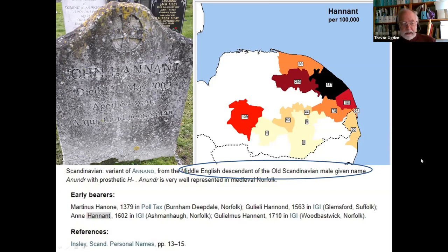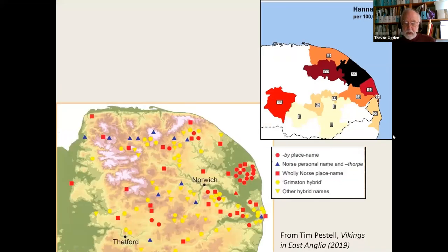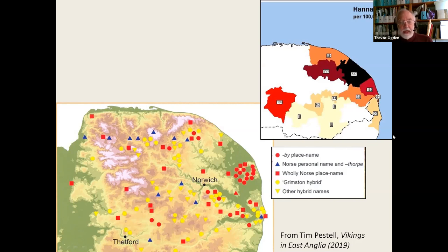We've got a 250-year gap between the end of Viking settlement and names becoming hereditary. But this is a suggestion that the name carries on and preserves the Old Norse heritage. That made me wonder whether there are any other names like this. So I looked at the names which occur more than three-quarters in the 1881 census in Norfolk, looking for other names that might have come from Old Scandinavian names and to see what their distribution was. I found two other names with Scandinavian origin. Talking about Viking settlement, this is Tim Pestle's map from his book Vikings in East Anglia — he's curator of archaeology at Norwich Castle. This is a map of where the Norse place names are in Norfolk, and you can see they tend to be in the north and the east.